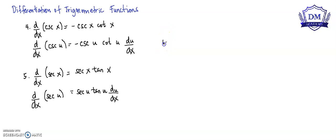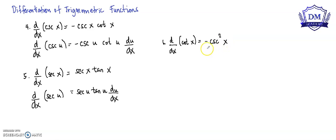And lastly, we have the derivative of cotangent x, and this is equal to negative cosecant squared x. So to understand more the differentiation of these three trigonometric functions, let's have a sample problem.